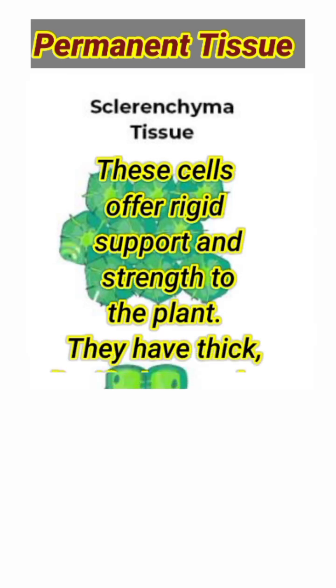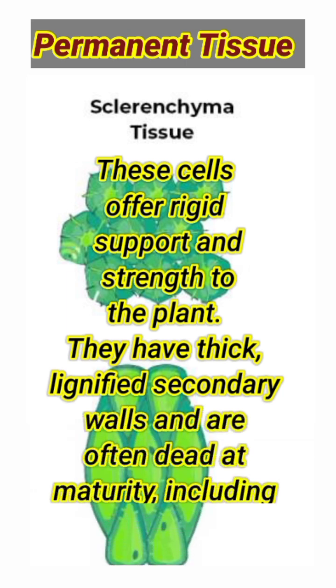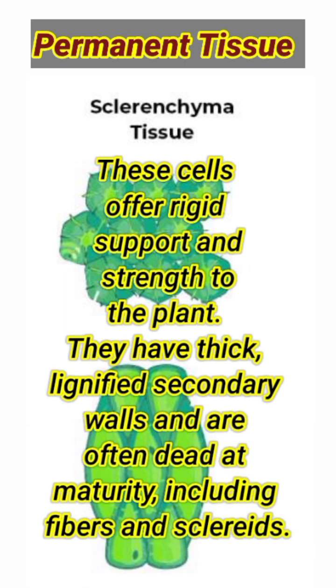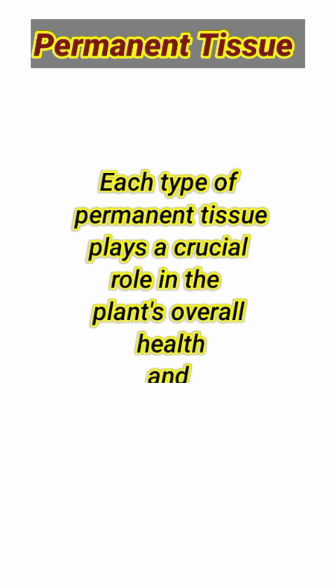Number 3: Sclerenchyma. These cells offer rigid support and strength to the plant. They have thick, lignified secondary walls and are often dead at maturity, including fibers and sclereids. Each type of permanent tissue plays a crucial role in the plant's overall health and functionality.